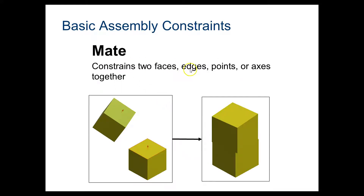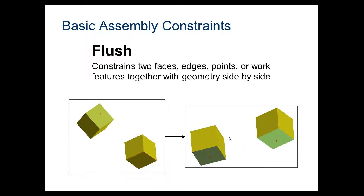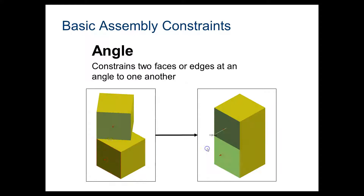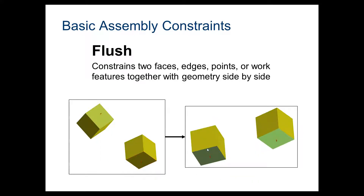A mate constrains two faces, edges, points, or axes together. So here we have an edge or face — we want to mate it to this edge or face, and here we see what happens when you mate those two. A flush is when you constrain two faces, edges, points, or work features together with geometry side by side — so if you wanted these two to be on the same work plane, that's what a flush is.